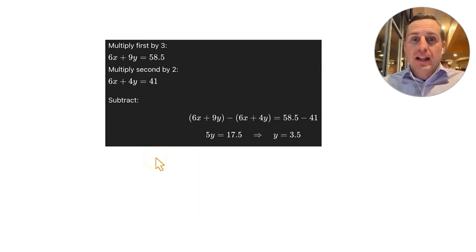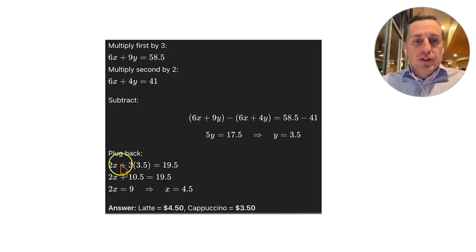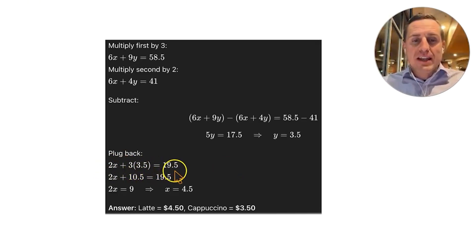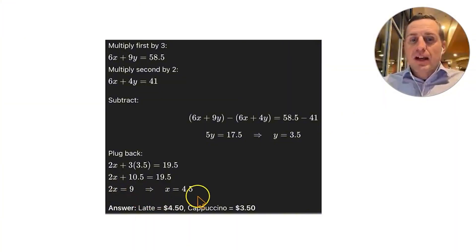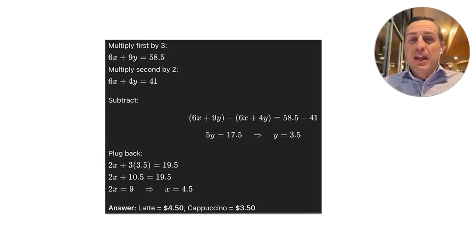To find the latte price, we back-substitute into the first equation: 2X plus 3 times 3.50 equals 19.50. That's 2X plus 10.50 equals 19.50; subtracting 10.50 gives 2X equals 9, so X equals $4.50. A latte costs $4.50 and a cappuccino costs $3.50. This time we used the elimination method on a 2×2 system.